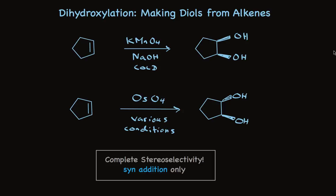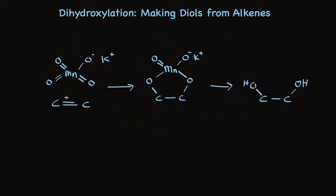First, let's look at permanganate. Following our standard arrow-pushing convention, we picture a pair of these pi electrons being used to form a bond with carbon and oxygen. That can only happen if these pi electrons move — they end up on manganese. And that can only happen if these electrons move; they are used to form the other sigma bond to carbon. In one simultaneous concerted process, the pi bond breaks and the two sigma bonds between carbon and oxygen are made. This guarantees that the reaction must have syn addition stereochemistry — both bonds must occur at the same face of the alkene.